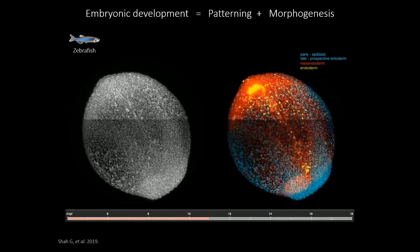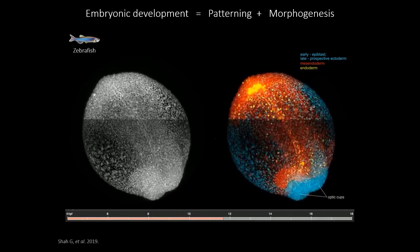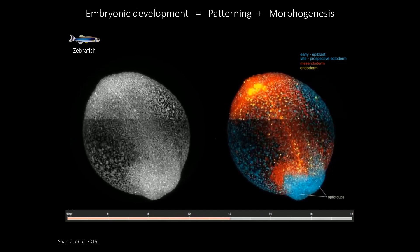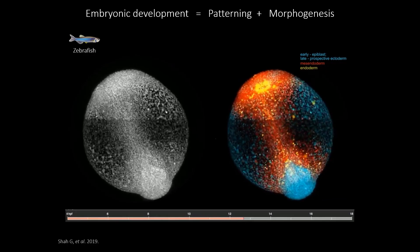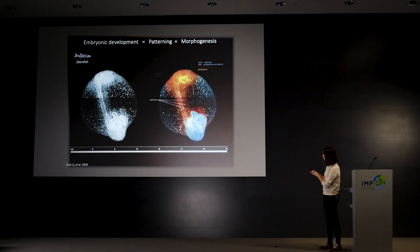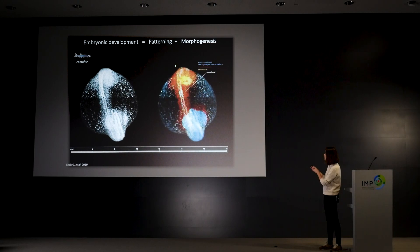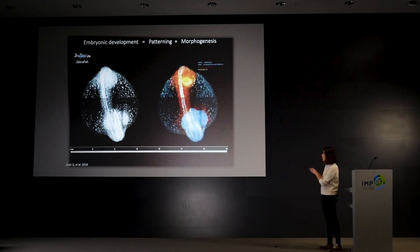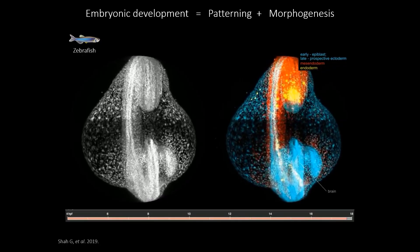At the tissue scale there's extension along one axis, convergence, and by the end of the movie you start to see something that looks like a fish — head structures emerge, you can already tell apart some somites and the emergence of the tail. All of this takes only a couple of hours.